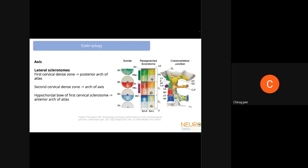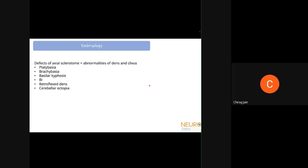For the lateral sclerotomes of these resegmented sclerotomes: the dense zone of the first cervical sclerotome gives rise to the posterior arch of the atlas, and the second cervical dense zone gives rise to the arch of the axis. Loose zones help the first and second cervical nerves emerge. The dense cells of the first cervical sclerotome also migrate in front of the notochord to form the hypocaudal bow, which gives rise to the anterior arch of the atlas. So the anterior arch of the atlas comes from the hypocaudal bow of the first cervical resegmented sclerotome, not from the pro-atlas.